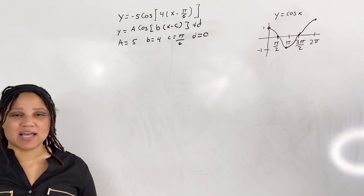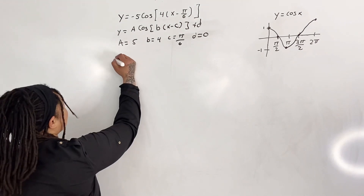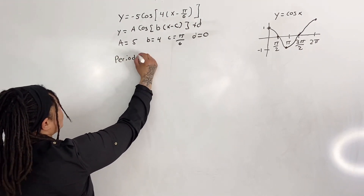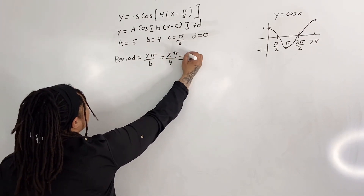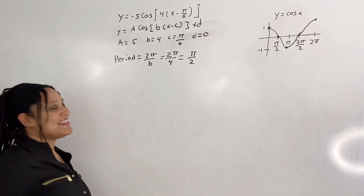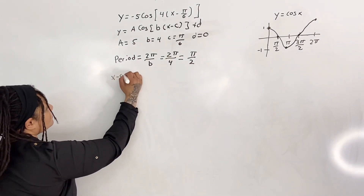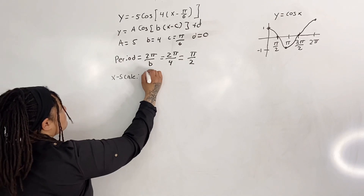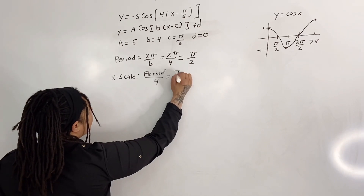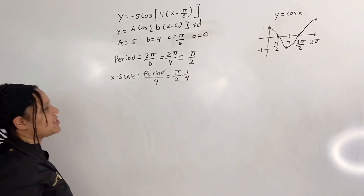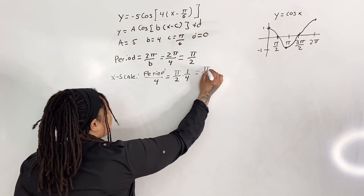Now we want to apply the transformations. First we compute the period, which equals 2 pi over b, which is 2 pi over 4, giving us pi over 2. Next we compute the x-scale, which equals period over 4. That is pi over 2 times 1 over 4, which gives us pi over 8.